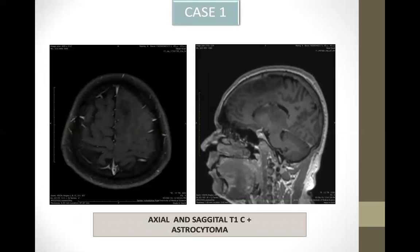Here are a few examples. This is a case of astrocytoma — a post-contrast sagittal T1 image with the tumor involving the frontal lobe, as you can see.